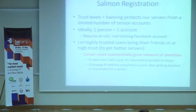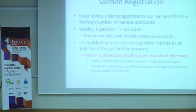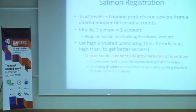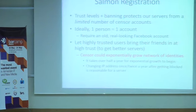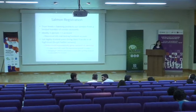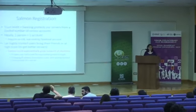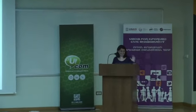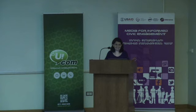Registration uses trust levels as the first demand for protection. Ideally, we want each person to have only one account. We require an old Facebook account so it looks like a real person, since government agents could create many new fake Facebook identities. There is also another vulnerability: if the government decides to run a server themselves, we can't protect our users against that attack. But we assume most servers are running in free countries.